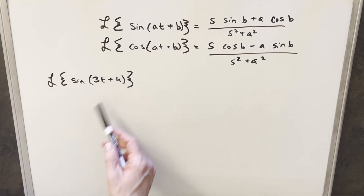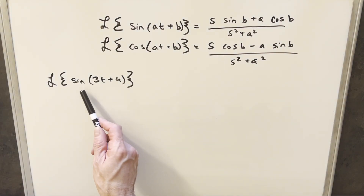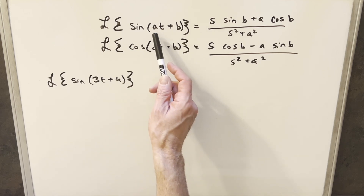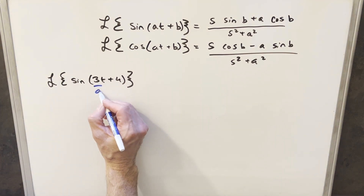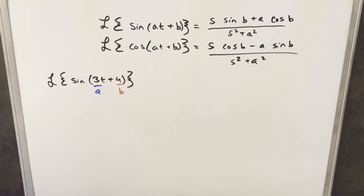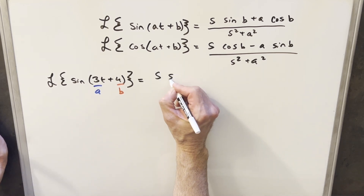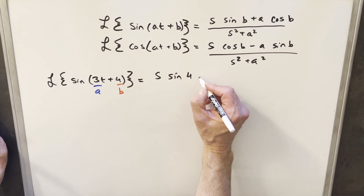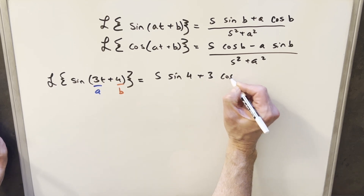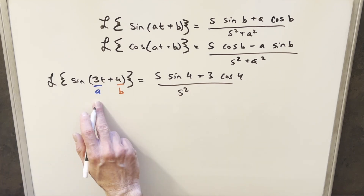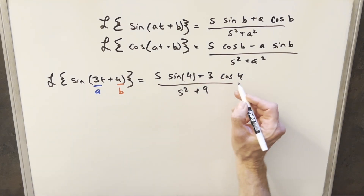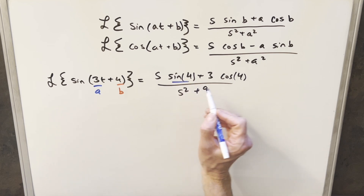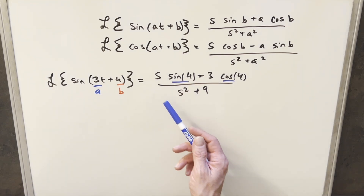Now we'll do one quick example: the Laplace of sine of 3t plus 4. We use the first formula for the Laplace of sine at plus b, with a equals 3 and b equals 4. Plugging into the formula, we get s times sine of 4 plus 3 times cosine of 4, all over s squared plus 9. It's a little unusual to have the sine and cosine of constant values, but this is how it comes out — these are just numbers, and our result is just a function in terms of s.